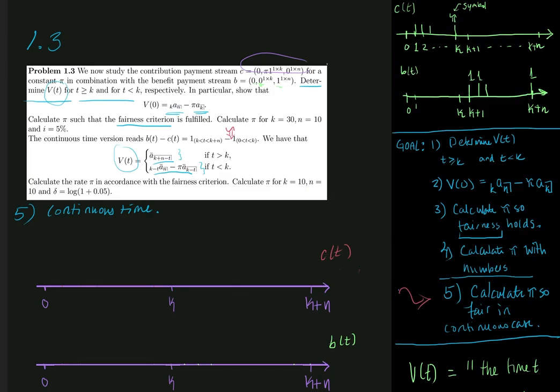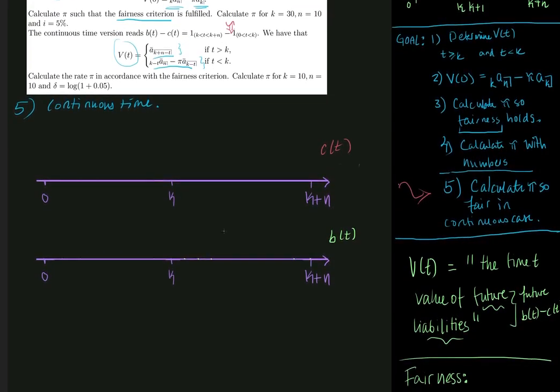So that means that b has value 1. So b of t is equal to 1 if t lies between k and k plus n. Let me just write that down. So b of t is equal to 1 if k is smaller than t and t is smaller than k plus n. And elsewise it is equal to 0 otherwise.